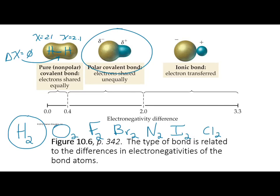For carbon monoxide, oxygen has an electronegativity of 3.5 and carbon is 2.5. The difference Δχ = 3.5 − 2.5 = 1.0. On the scale, that corresponds to a polar molecule — the electron isn't fully transferred, but oxygen carries a partial negative charge.